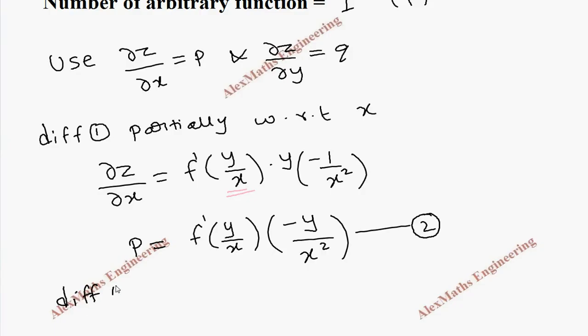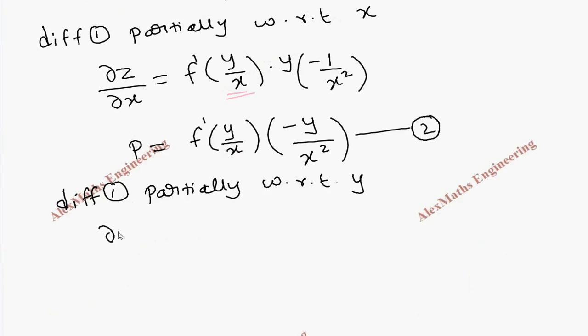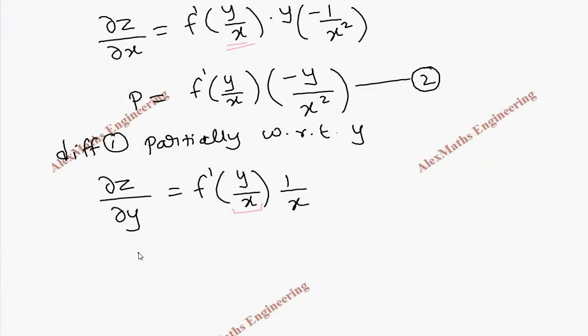Now differentiating equation 1 partially with respect to y: ∂z/∂y = f'(y/x). Here x is treated as a constant, so using the chain rule, the derivative of y/x is: the constant 1/x is written as it is, and derivative of y is 1. Now rewriting this: q = f'(y/x) × 1/x. This is our third expression.